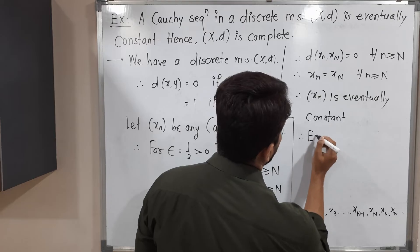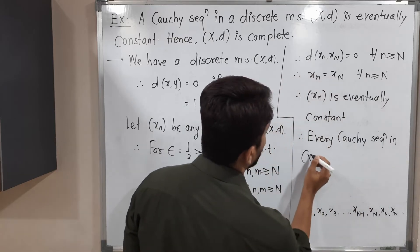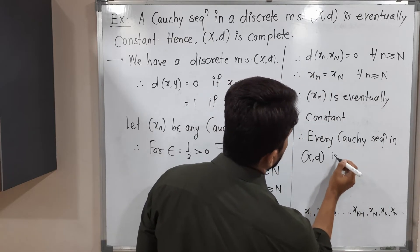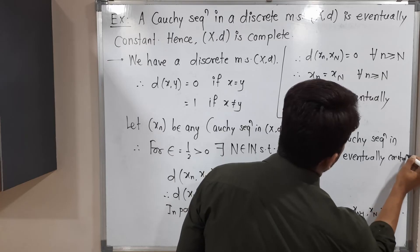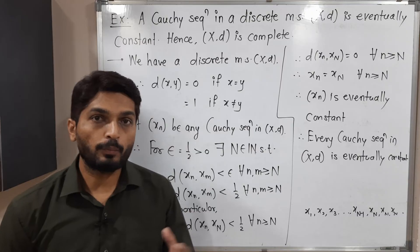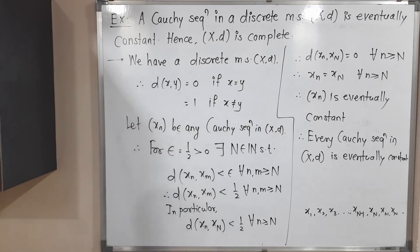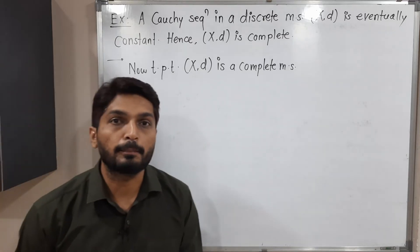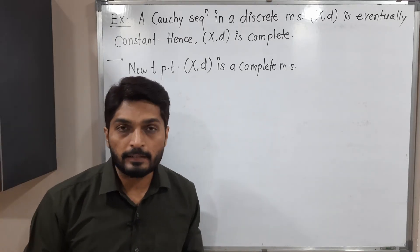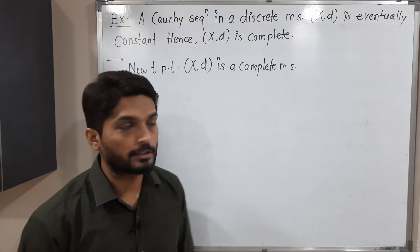Therefore every Cauchy sequence in X_d, where X_d is a discrete metric space, is eventually constant. That means the first half of this example is done. Now we have to prove the next half: that X_d is a complete metric space. To prove X_d is a complete metric space — a metric space is complete if every Cauchy sequence is convergent — we will start with any arbitrary Cauchy sequence and prove it is convergent.